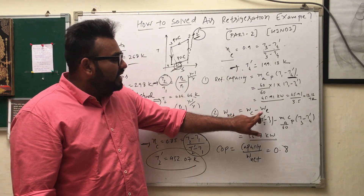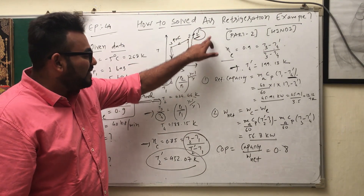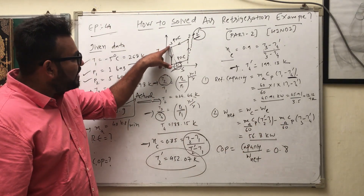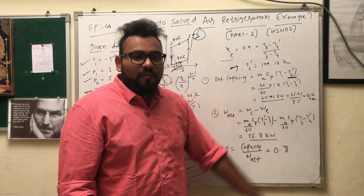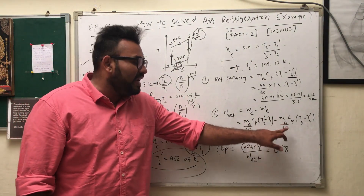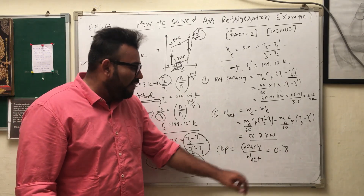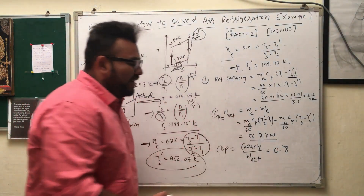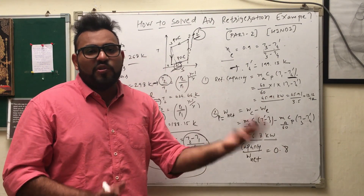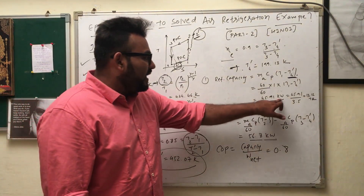To find Wnet: Wnet = Work done by compressor − Work done by expander. In the actual cycle, work by compressor = m × Cp × (T2_dash − T1) / 60, and work by expander = m × Cp × (T3 − T4_dash) / 60. Don't forget to divide by 60 since mass is in kg/min. COP = Refrigerating Capacity / Wnet. Keep both capacity and Wnet in the same units (kW), since COP is dimensionless.